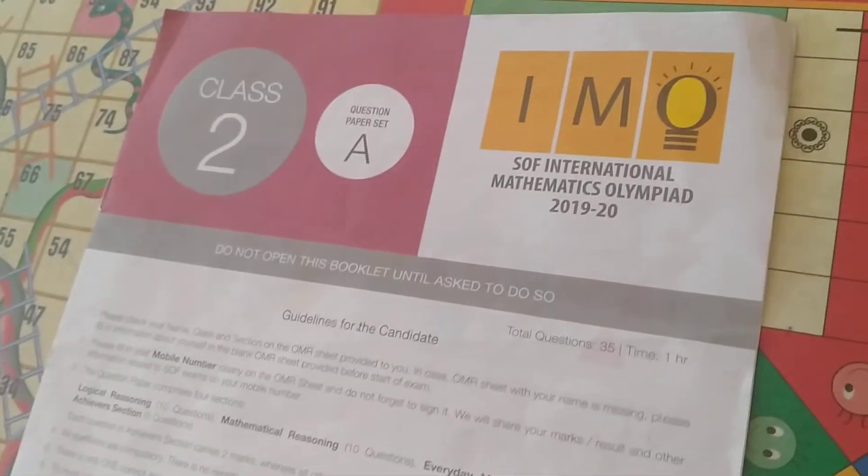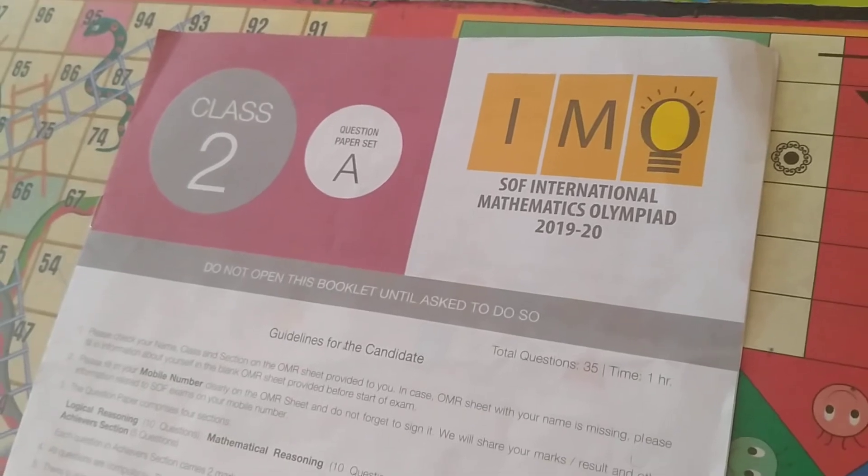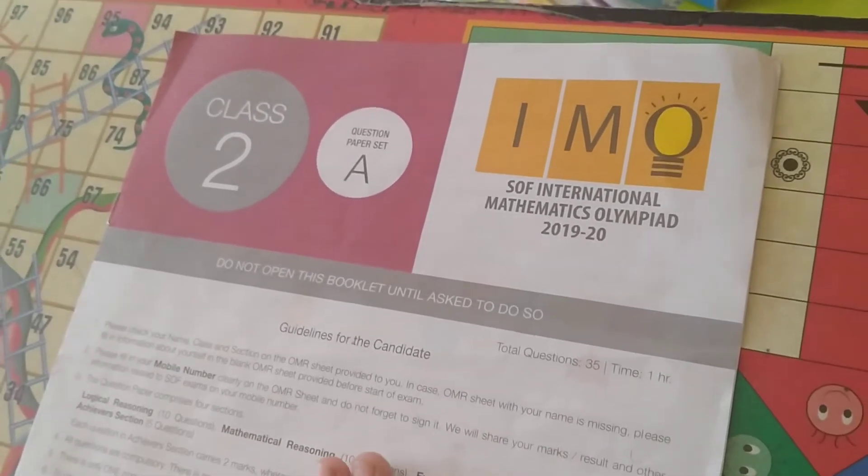Hello friends, this is IMO Olympiad, class 2, question paper set A. So let's start.